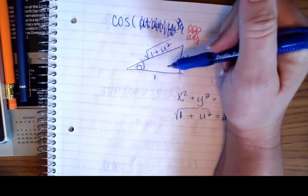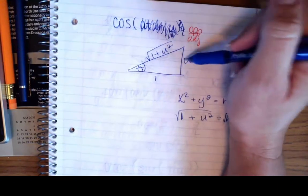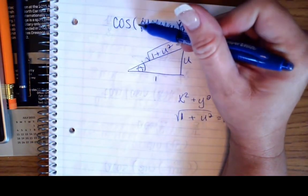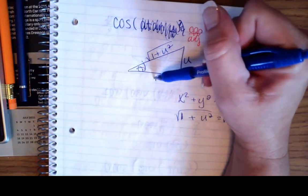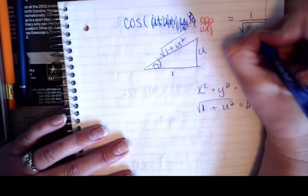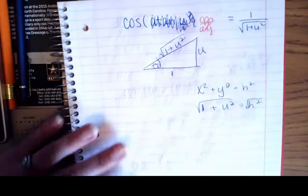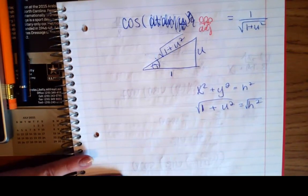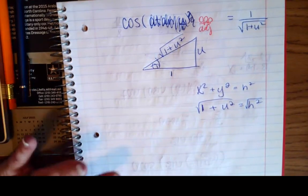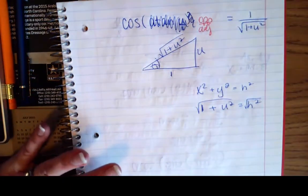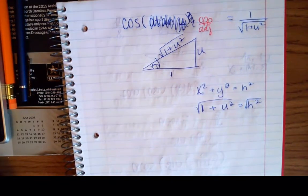Now tell me what the cosine of that angle is. You don't know the actual value of the angle, but you can complete the ratio. Cosine is adjacent over hypotenuse, so cosine equals 1 over √(1 + u²). Do not rationalize — it's going to be a mess if you rationalize, and we like it in this format. You'll understand why when you get to calculus, because we end up pushing things into trig world to do the calculus and then pull it back out.